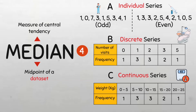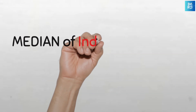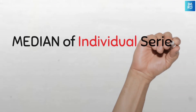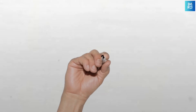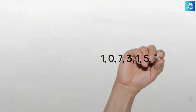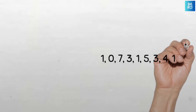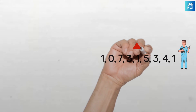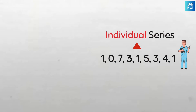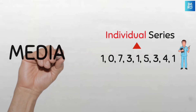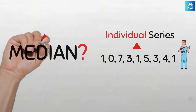We have four data sets with all possible scenarios that you can have in an examination or even in a real life scenario. Let's do this. Median of individual series data for odd number of data points. This is the data set of the number of clinic visits in the last year of a sample of nine children. This is an individual series data because each number here represents the data from one child. Let's find the median of this data.